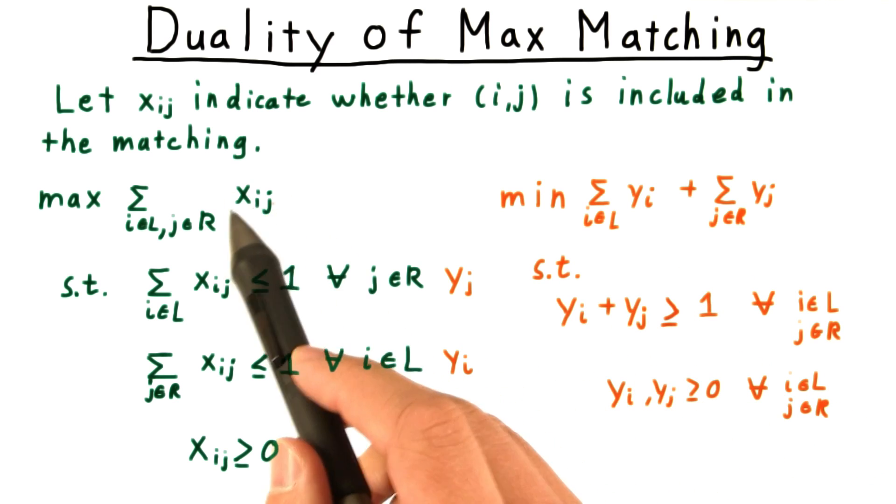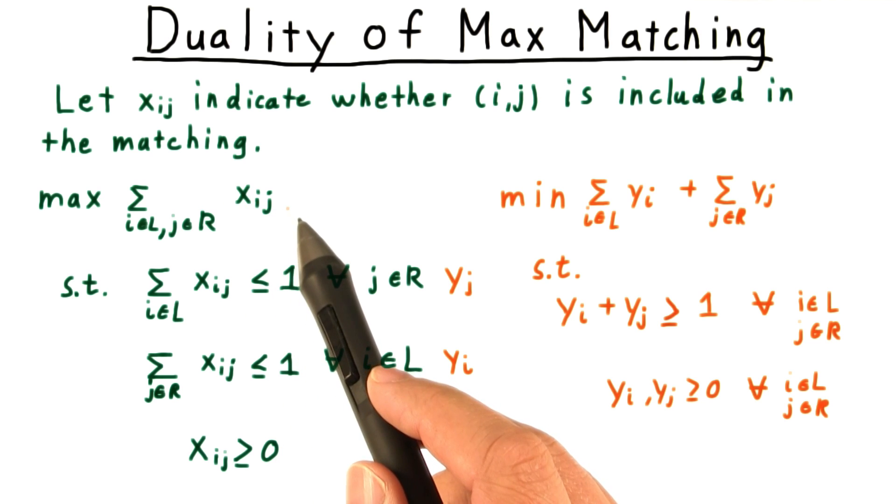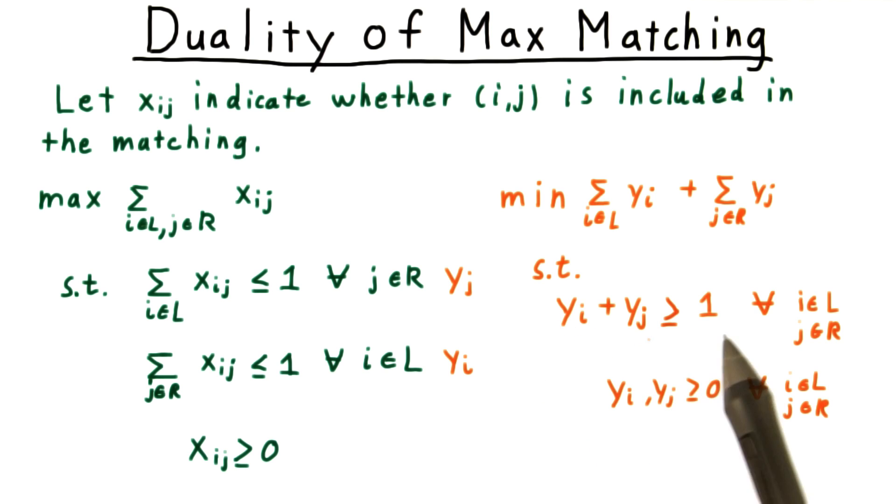For the constraints, observe that the coefficients in the objective function are 1, and that any xij appears once in the equation for i and once in the equation for j. Hence, yi plus yj is at least 1. And of course, yi and yj can't be negative.